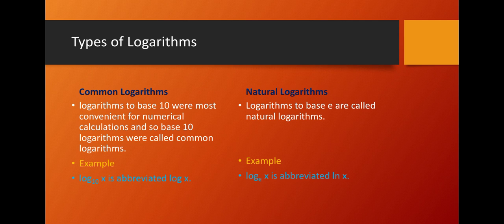Common logarithms are to the base 10 and are most convenient for numerical calculations. Base 10 logarithms are called common logarithms and we can simply write them as log x. Natural logarithms are logarithms to the base e and are called natural logarithms. For example, log base e of x is abbreviated as ln x, meaning natural log equals log base e.